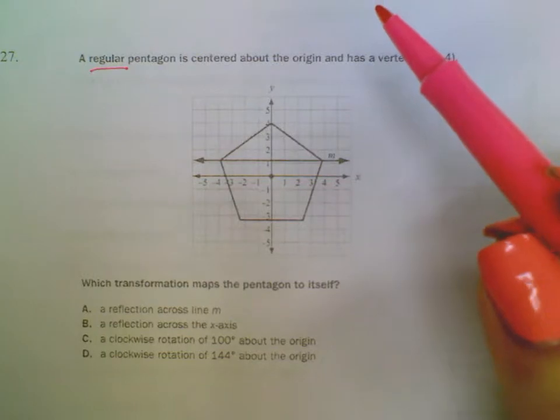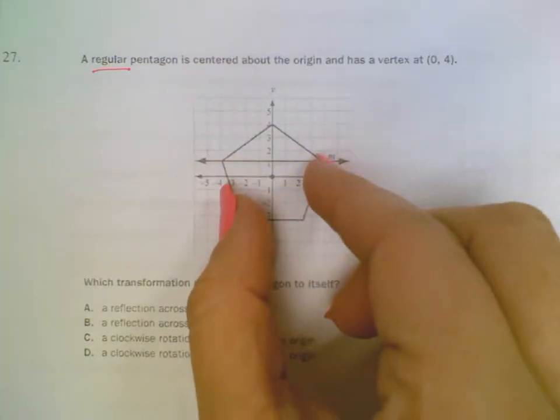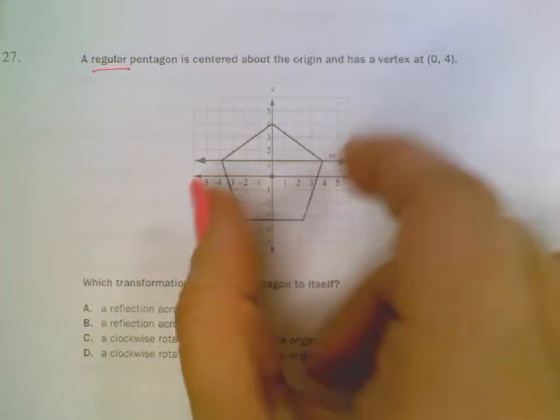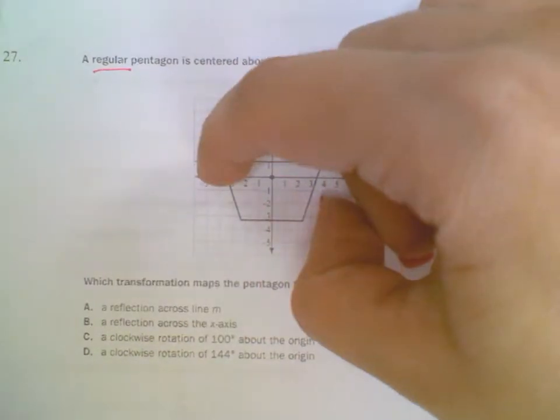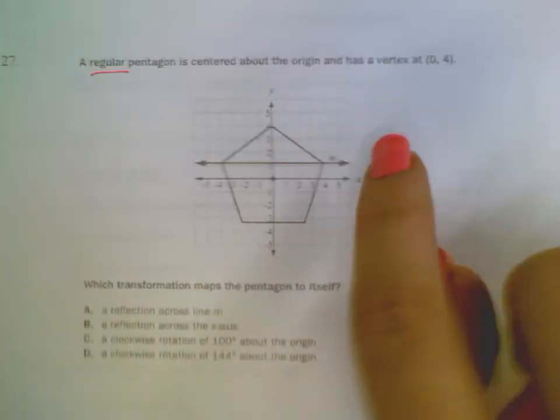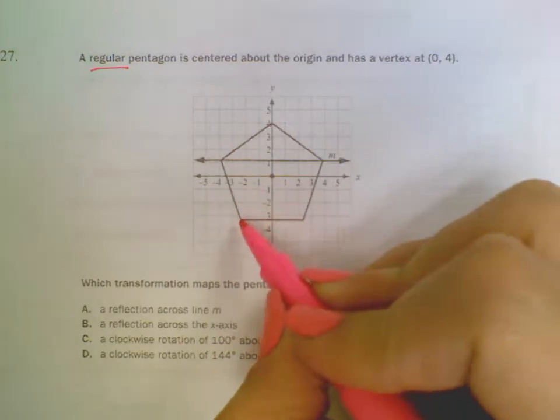We're trying to say which transformation maps the pentagon to itself. If you think about it, if I were to rotate to where this point was on top, it would still be okay. Here would be okay. I just want to say how I can get this point here, here, here, or here.